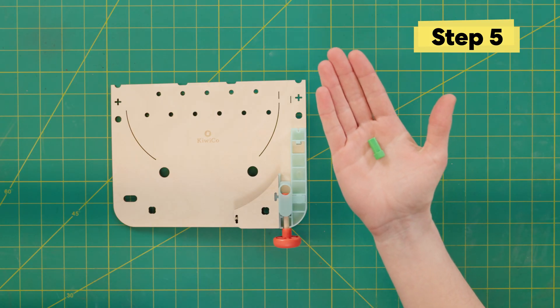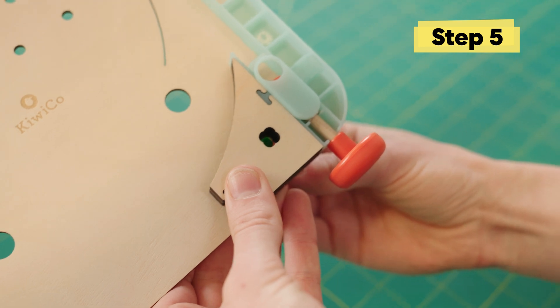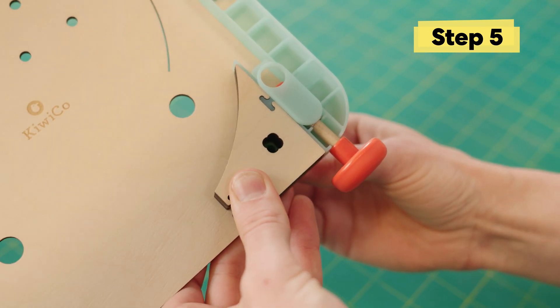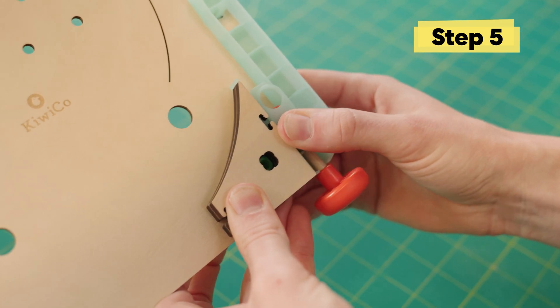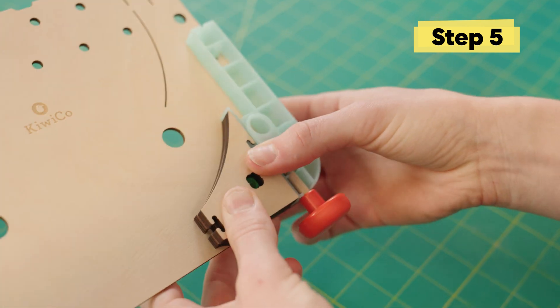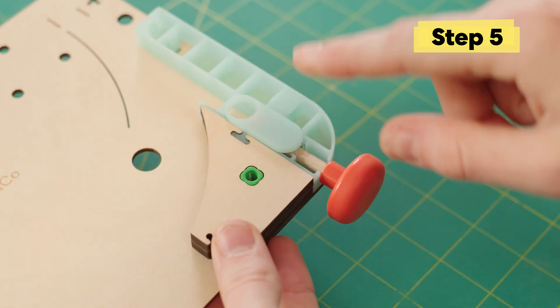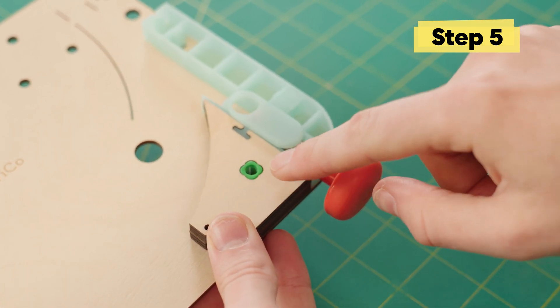Next, find this long green standoff and push it up through the bottom of your pinball machine. It might take a little bit of muscle, but that's because we want it to be nice and snug. Push it all the way up until it's sitting flush. You can get a grown-up to help if it's kind of hard.